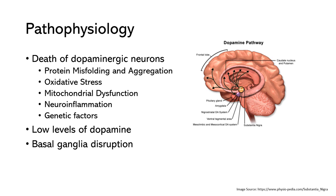Mitochondria are the energy-producing organelles within cells. Dysfunction of mitochondria, such as impaired energy production and increased production of ROS, has been implicated in Parkinson's. Mitochondrial dysfunction can trigger a cascade of events, including oxidative stress, protein misfolding, and inflammation, and these all ultimately lead to death of dopaminergic neurons.